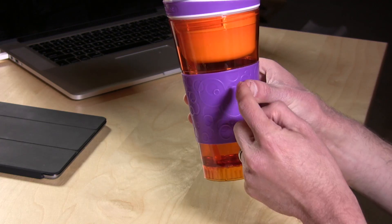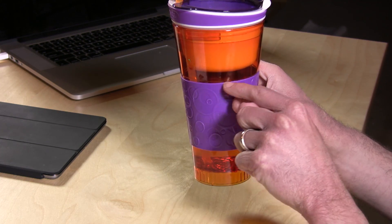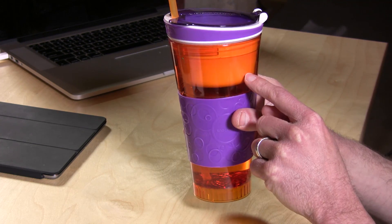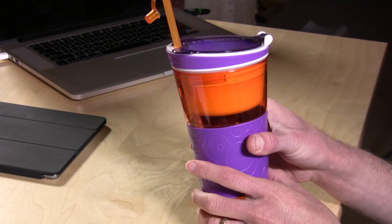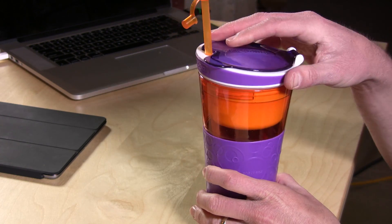You just want to make sure that I usually just fill it up to about the end of the purple grip here, because when this goes in you'll displace any water or juice or whatever that you put in there. So make sure that you're aware of that, just fill it up to that line and you'll be all set.